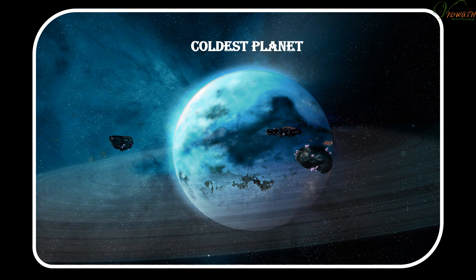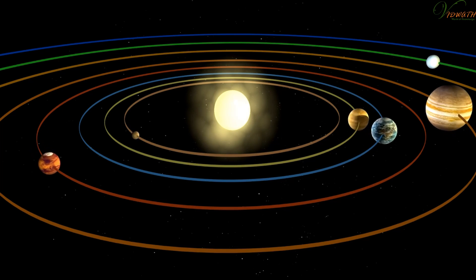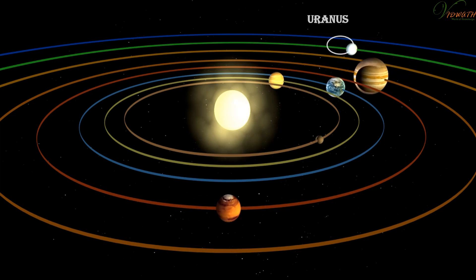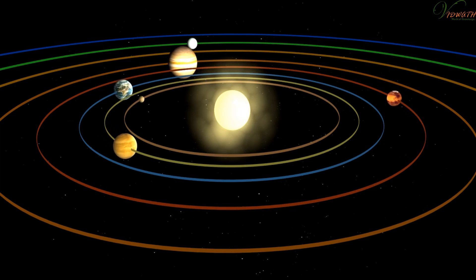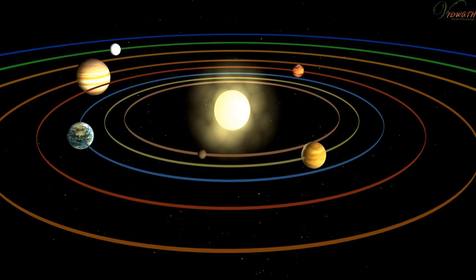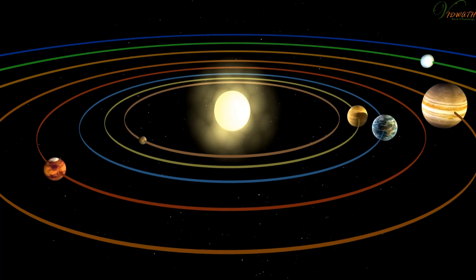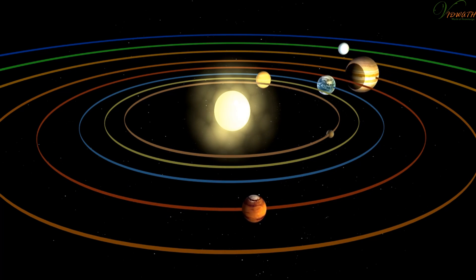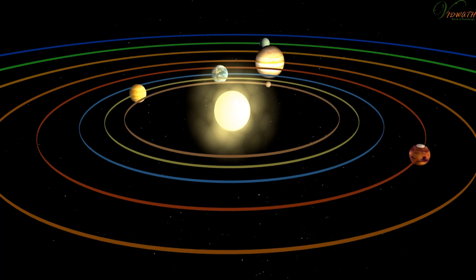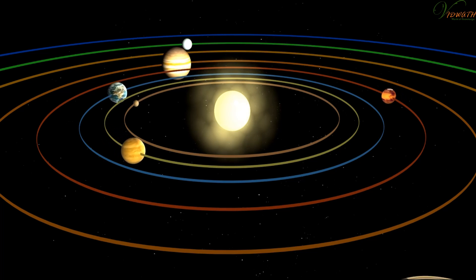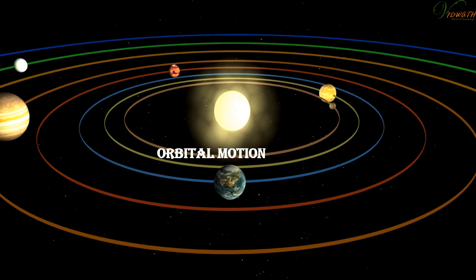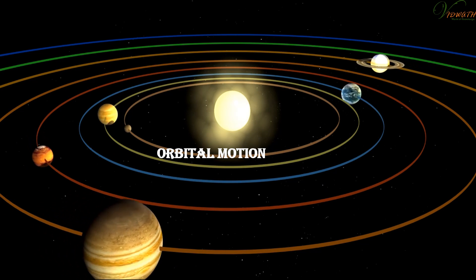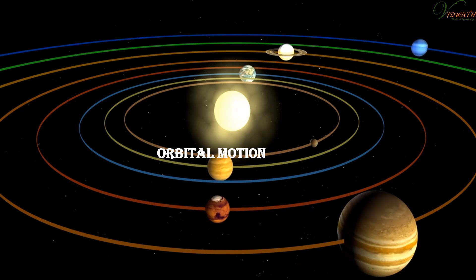Uranus is the coldest planet. Like Venus, Uranus also rotates from east to west. It has a highly tilted rotational axis, so that in its orbital motion it appears to roll on its side.